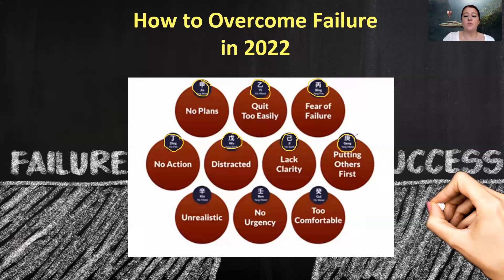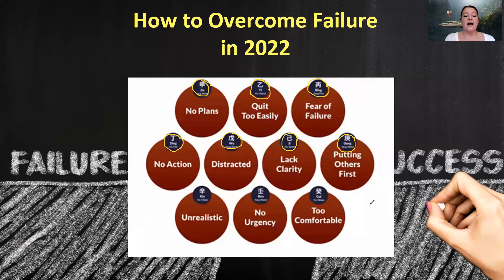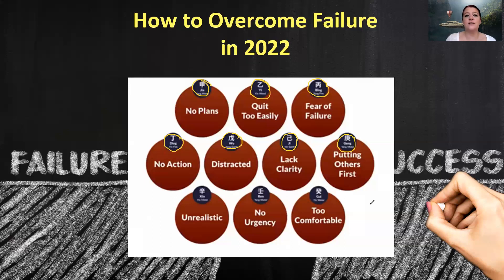If your month stem is Geng Metal — the Yang polarity of metal — the risk of failure lies in putting others first and not yourself. While helping everyone else is a good thing, you may be taking care of too many other people's needs — it's too much. You need to every now and then think about yourself as well. Make sure that you have enough time and energy for yourself. If you're taking care of too many other people, by the end of the day you're too exhausted to do what you need to do for yourself. Put time, effort, and energy aside for yourself so you're not being left behind.